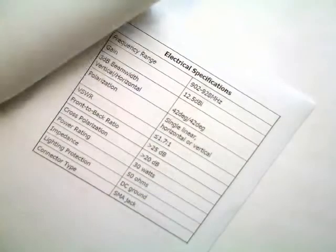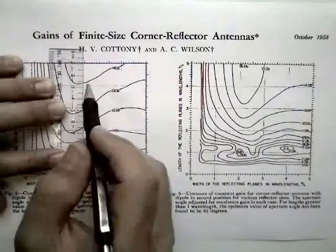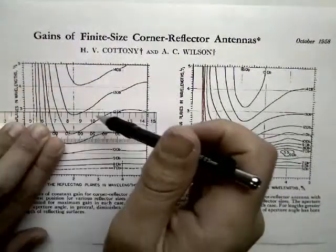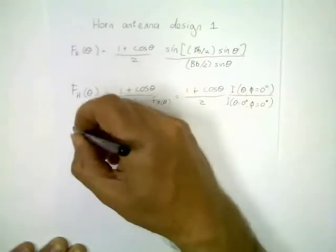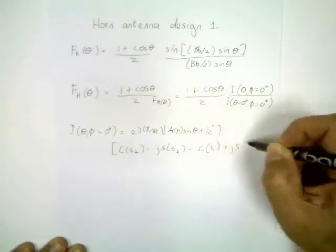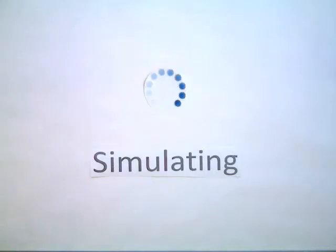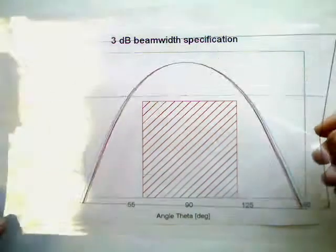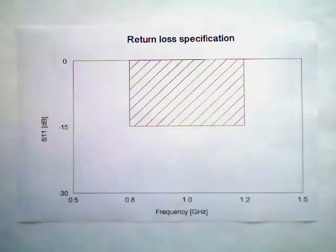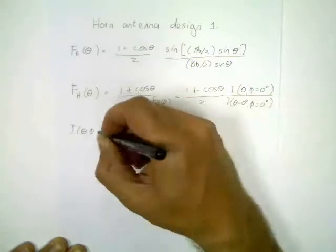The next step was to adapt the element to meet given specifications — change the simulation model with new electrical and physical parameters, simulate and assess the results against electrical specifications. This was an iterative process which had to be repeated to improve the antenna's performance.